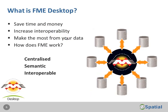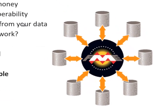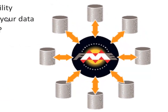So, what is FME Desktop? When you buy FME, you buy a processing engine that allows you to both transform and translate your data. This simple diagram represents the FME engine, and hanging around the edge of that engine are the different formats supported by FME. FME 2012 supports over 275 of these formats.